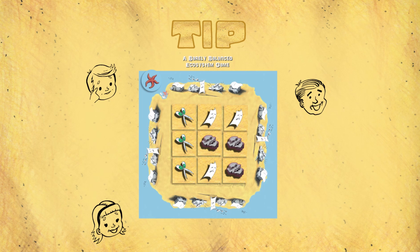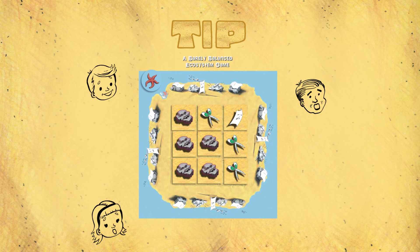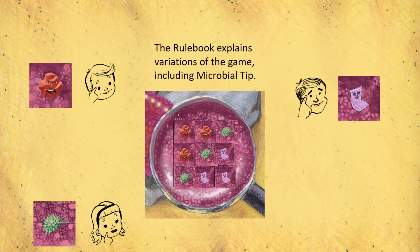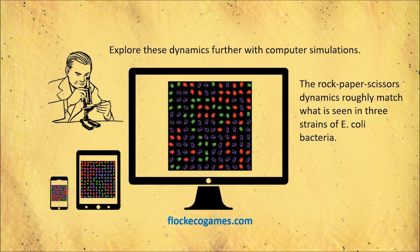In Tip, you try to take over an ecosystem made up of three species, but it's difficult — coexistence often lasts a very long time. We have a version of this game called Microbial Tip, made up of three types of bacteria, and you will see that as in real life the three types can last a long time.